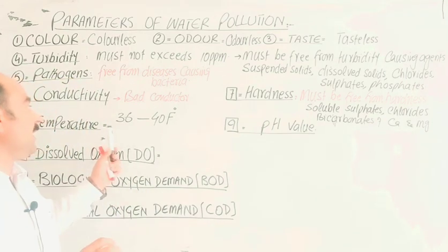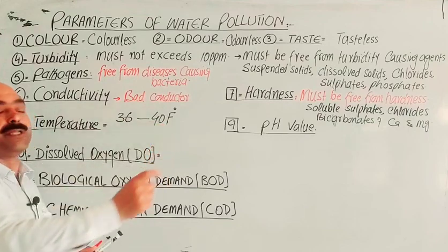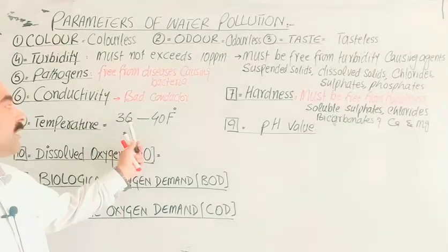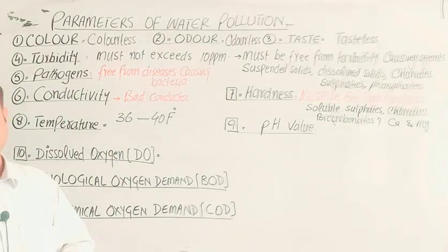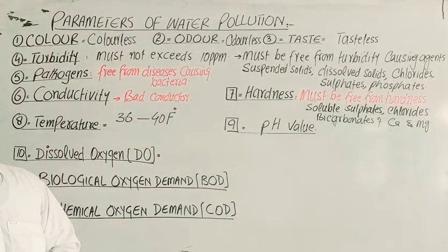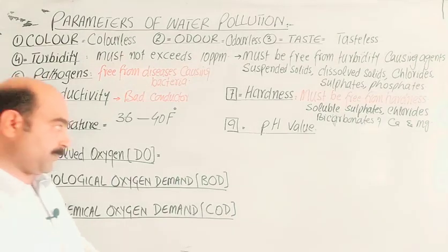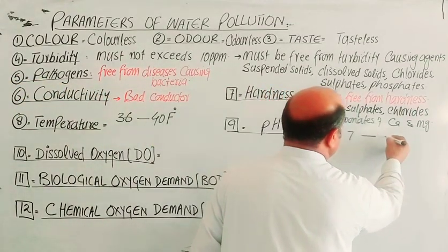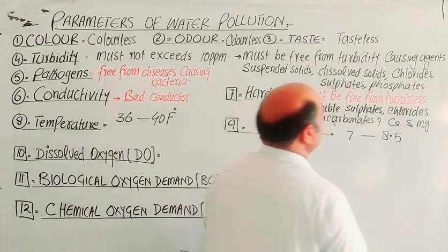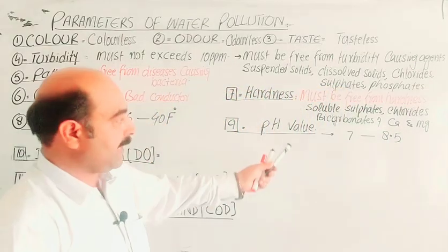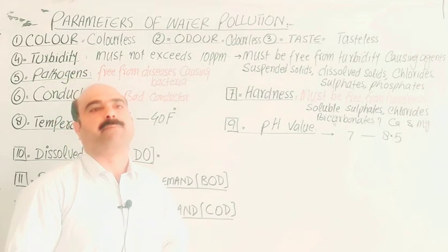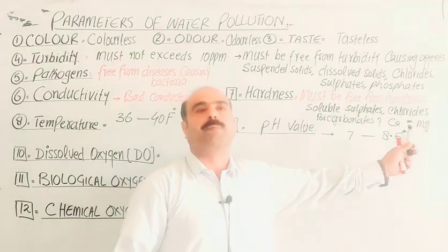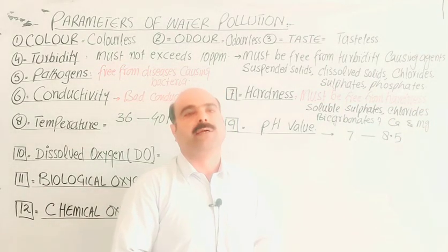pH value must be in the range of 7 to 8.5. Water with pH in this range is best for drinking purposes. If the pH falls outside this range — becoming too acidic or too basic — it becomes harmful.